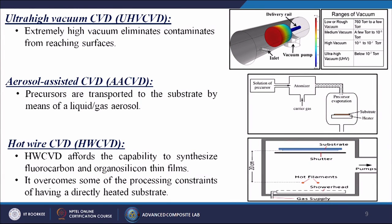Hot wire CVD (HWCVD) affords the capability to synthesize fluorocarbon and organosilicon thin films. It overcomes some of the processing constraints of having a directly heated substrate. In this process, certain heat is used, which is why it is known as the hot wire CVD process.